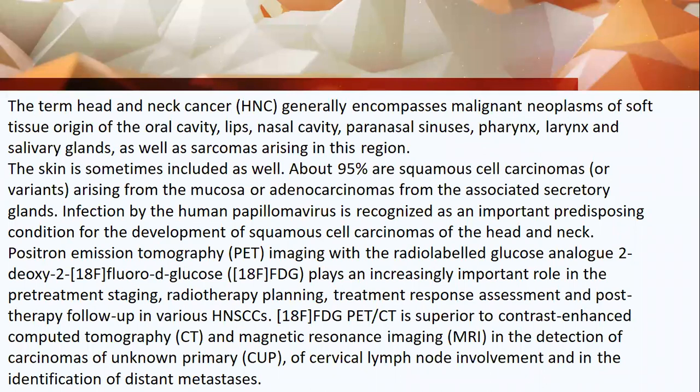The care of head and neck cancer generally encompasses malignant neoplasms of soft tissue origin of the oral cavity, lip, nasal cavity, paranasal sinuses, pharynx, larynx, and salivary glands, as well as sarcomas arising in this region. The skin is sometimes included in this classification. About 95 percent of tumors are squamous cell carcinomas or variants arising from the mucosa, or adenocarcinomas from the associated respiratory glands.